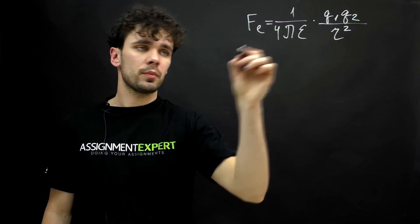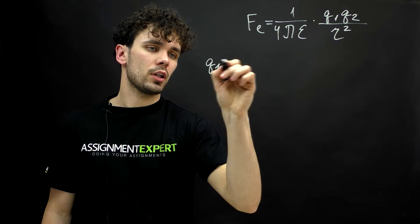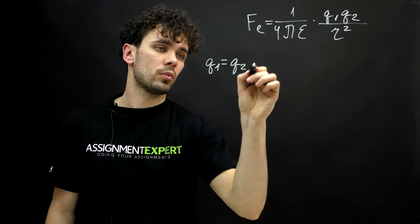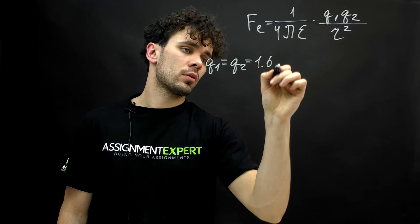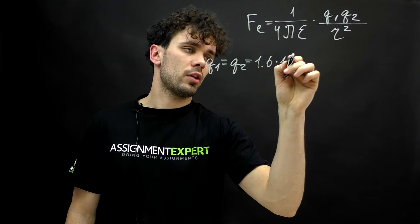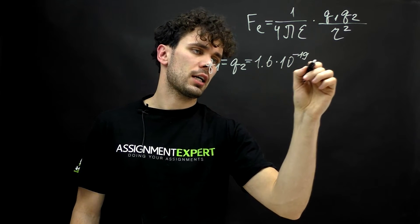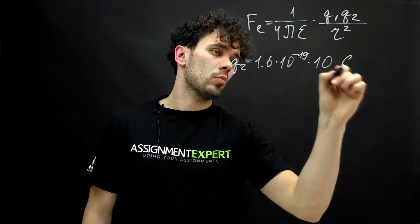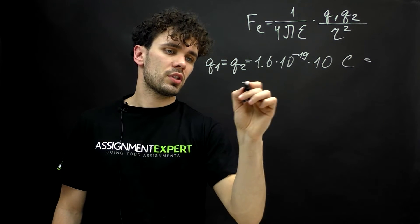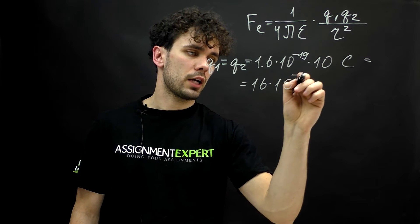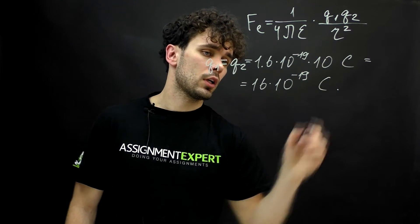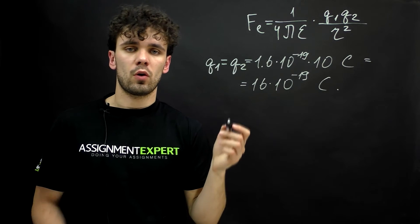Where q1 equals q2 equals 1.6 times 10 raised to the negative 19th power times 10 coulombs and gives us 16 times 10 raised to the negative 19th coulombs. And this is the charges of two ions.